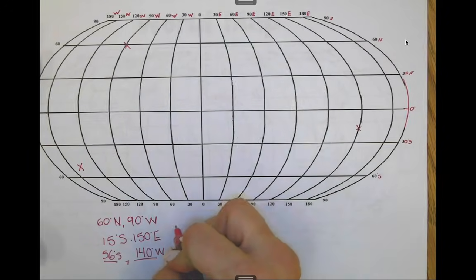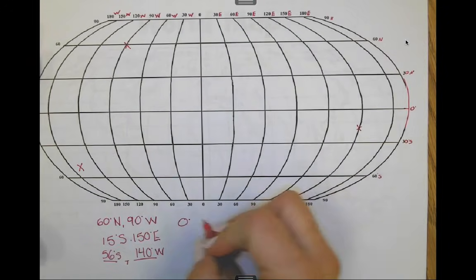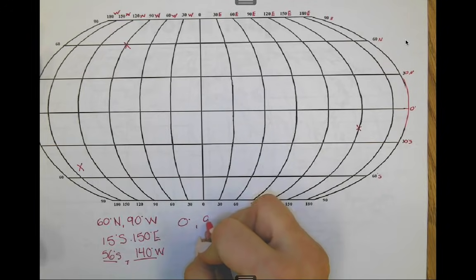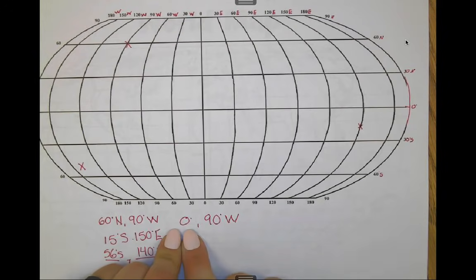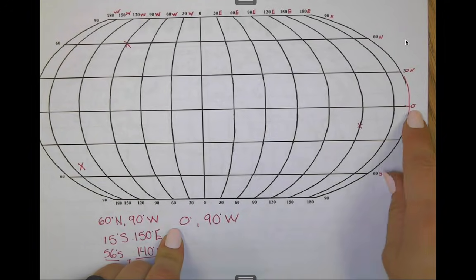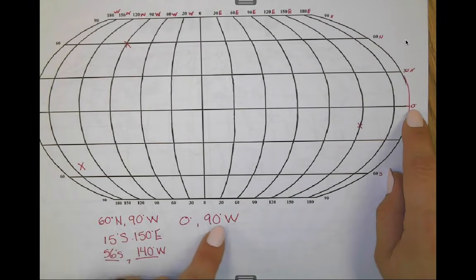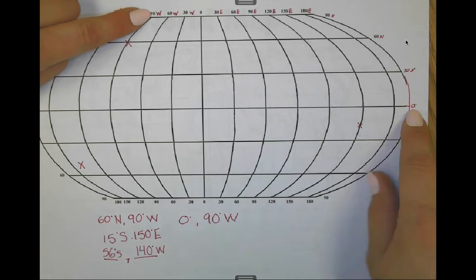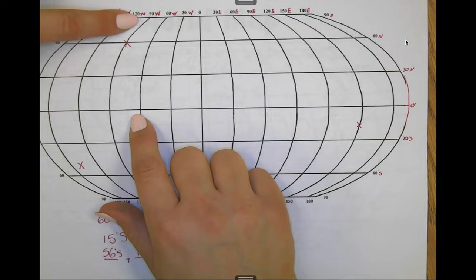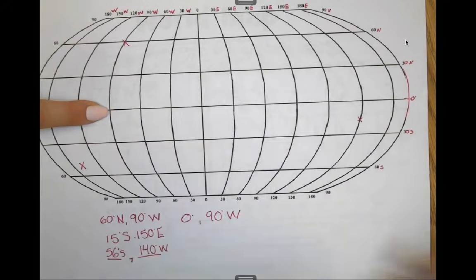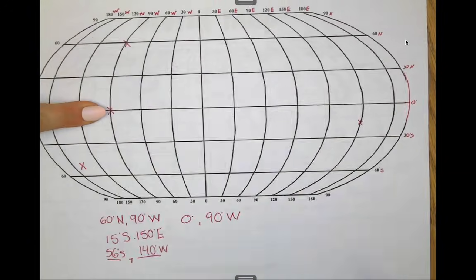Let's try another coordinate: 0 degrees and 90 degrees west. The first coordinate is always latitude and we see there's no delineation of north or south — that's because 0 degrees is along the equator. So starting at 0 degrees and then finding 90 degrees west, I'm going to travel over and follow that line, whipping around and ending up here for 0 degrees and 90 degrees west.